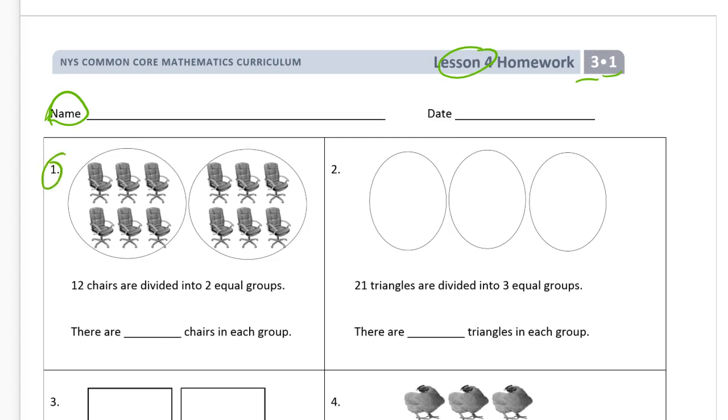The first one, 12 chairs are divided into two equal groups. The groups have to be equal. Very important. Just like with multiplication, it has to be for division. So there are 1, 2, 3, 4, 5, 6 chairs in each group.